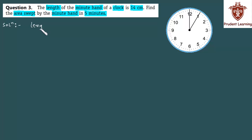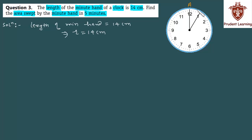We are given length of the minute hand of the clock is 14 centimeters, iska matlab is circular clock ka radius 14 centimeter hai. Shuru mein minute hand 12 pe hoga — is point ko A se denote karte hain. 5 minutes baad ye minute hand 1 pe jayega — isko point B bolte hain. Jo shaded portion hai woh is poore circle ka ek sector hai, aur indirectly aapko is sector ka area find karna hai. Radius maalum hai — 14 cm. Bas sector ka angle pata chal jaye to area aasani se nikal sakte hain. Let angle of sector be theta.